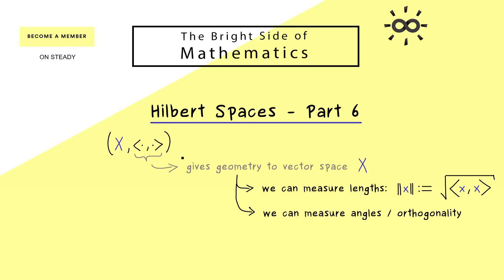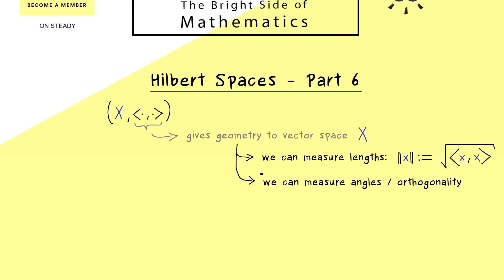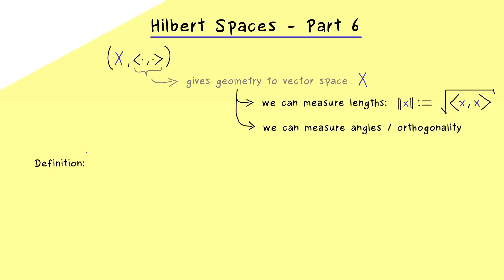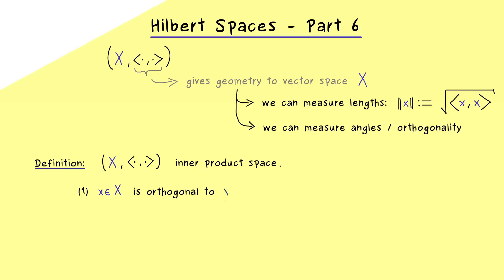The inner product tells us if two vectors are orthogonal to each other. This is not complicated at all — it just generalizes what we already know from the standard inner product in ℝⁿ. This means we have orthogonality if the inner product vanishes, and indeed this definition is the same in the real vector space and in the complex vector space. We say that a vector x in an inner product space X is orthogonal to another vector y.